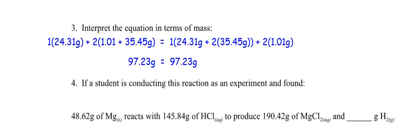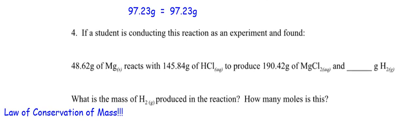So if a student is conducting this reaction as an experiment and found, this is more of a real world situation. This is what people like out in industry. They're not going to have nice, neat one moles. They're going to have real masses. So if I have 48.62 grams of magnesium reacts with 145.84 grams of hydrochloric acid to produce 190.42 grams of magnesium chloride, how many grams of hydrogen are being made? What am I going to do? I'm going to use the law of conservation of mass.